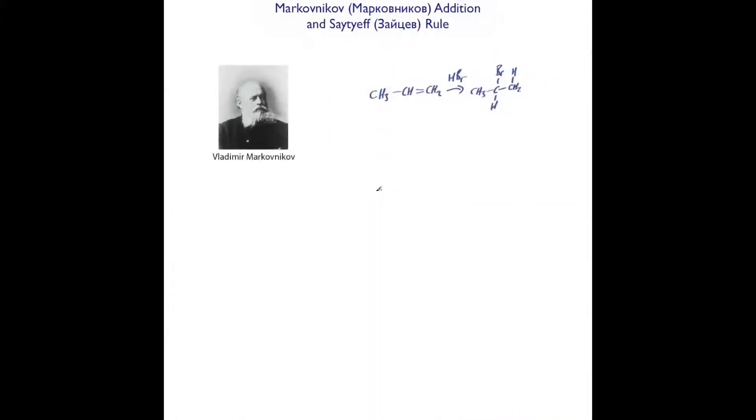Hi, in this tutorial we're going to go over Markovnikov's Addition and Zaitsev's Rule. This is Vladimir Markovnikov. I put the names up in Russian because sometimes you'll come across these names spelled slightly different - Zaitsev can start with a Z and Markovnikov can have F's instead of V's.